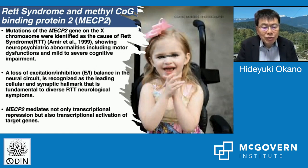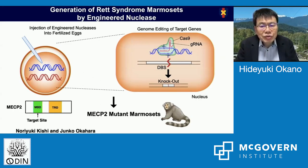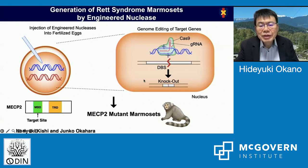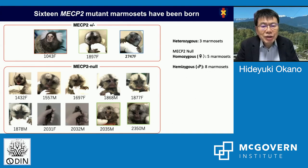MeCP2 functions not only in transcriptional repression but also in transcriptional activation of target genes. We generated a Rett syndrome model marmoset by injection of engineered nucleases — zinc-finger nucleases or CRISPR-Cas9 — into marmoset fertilized eggs. These nucleases target exon 3 of the MeCP2 gene encoding the methyl-CpG binding domain. Through DNA double-strand breaks and non-homologous end joining, we generated MeCP2 mutant marmosets. So far, we have generated 16 MeCP2 mutant marmosets: 3 heterozygous female and 13 MeCP2 mutants, including 5 female homozygous and 8 male hemizygous.